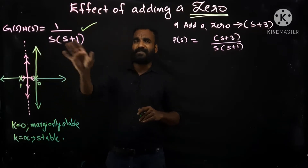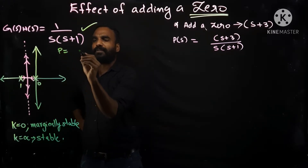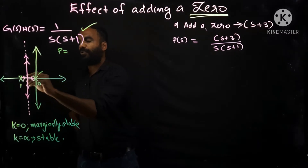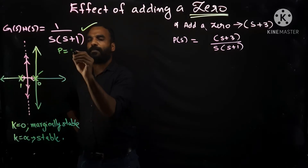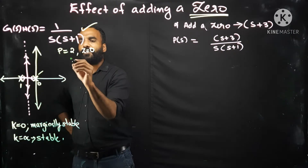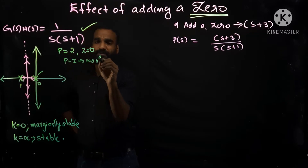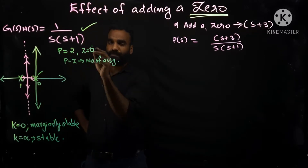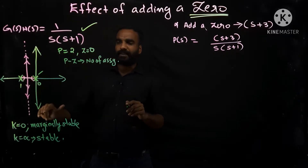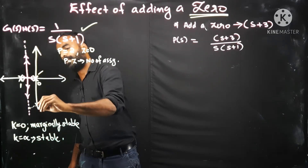Let me briefly recap how to draw the root locus diagram for this simple system. It has poles at s=0 and s=-1, so number of poles is 2 and number of zeros is 0. Therefore there will be two asymptotes — p minus z equals 2 — and the angles will be +90° and -90°. This is the asymptote line we already drew: +90° and -90° dotted lines.